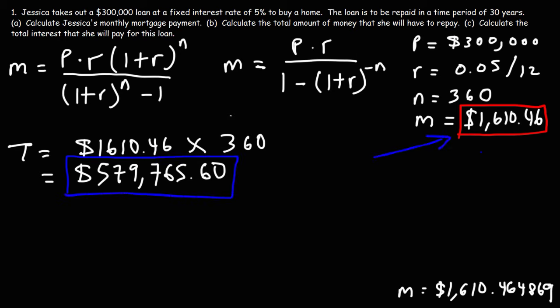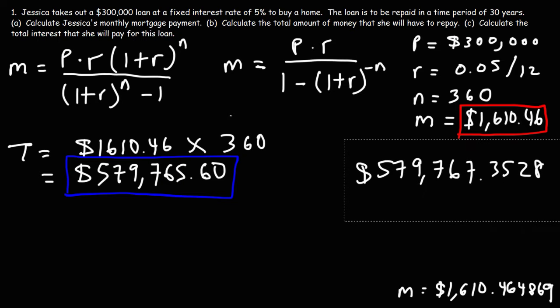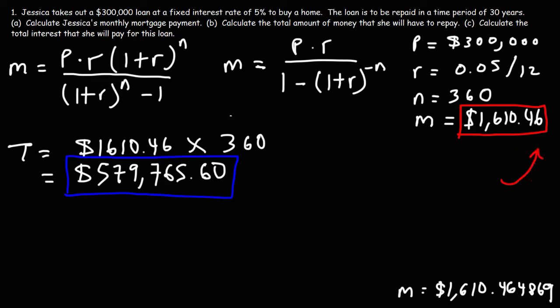Now granted, this is based on our rounded answer. If we want to find the exact value, we could take this number and multiply it by 360. Let's do that. So the exact value is 579,767.35. So we could see the difference is approximately $2. So not too much of a difference. But nevertheless, we can go for a rounded answer. Because when you make a monthly payment, it's going to be rounded. Typically, it's rounded to near a cent. So this will be a reasonable answer for Part B.